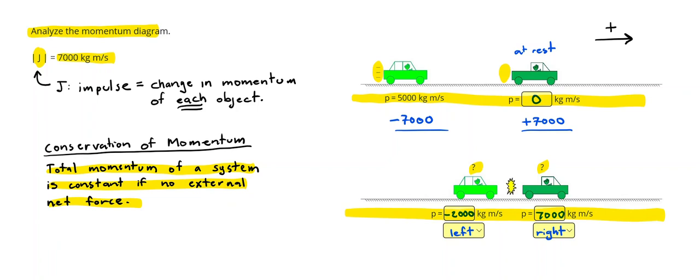Then what's the total momentum on the next line? Well, negative 2,000 combined with 7,000 will also give me a positive 5,000. So by conservation of momentum, this checks out. And I feel good about my answers.